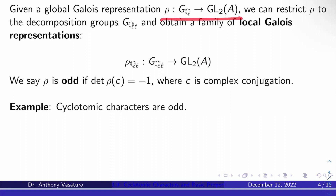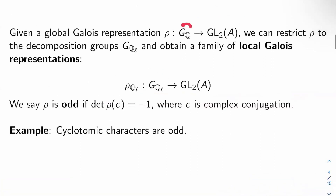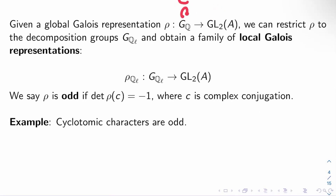We say rho, a Galois representation, is odd if the determinant of rho of C is negative one, where C is complex conjugation. Remember, in G_Q, there are only a couple of elements you can really concretely write down — the identity and complex conjugation are among them. You can take complex conjugation, send it somewhere, then follow with the determinant map. If the result is negative one, we call rho an odd representation. As a quick exercise, it's easy to see that cyclotomic characters are odd.